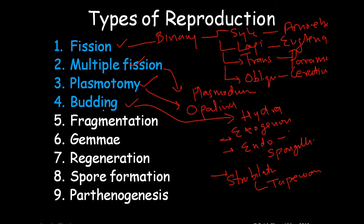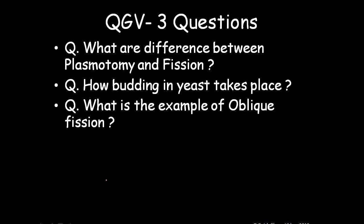We have covered up to budding in this video. In Part 2 we will cover fragmentation, gemmae, regeneration, spore formation, and parthenogenesis. Three QGV questions to consider: What is the difference between Plasmodium's multiple fission and binary fission? How does budding in yeast take place? What are examples of oblique fission? Put your answers in the comment section, and please watch Part 2 for completion of this topic. Thank you.